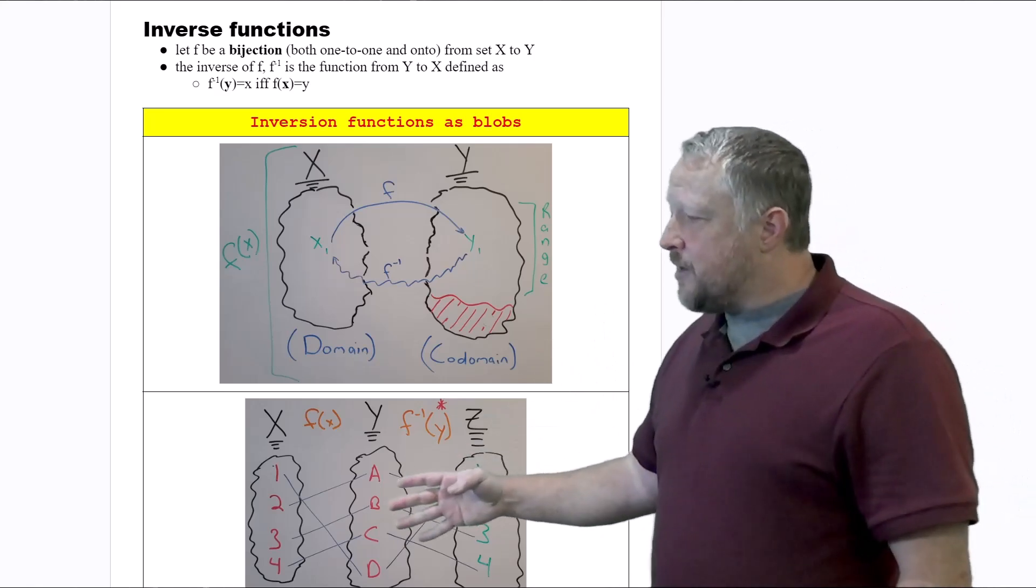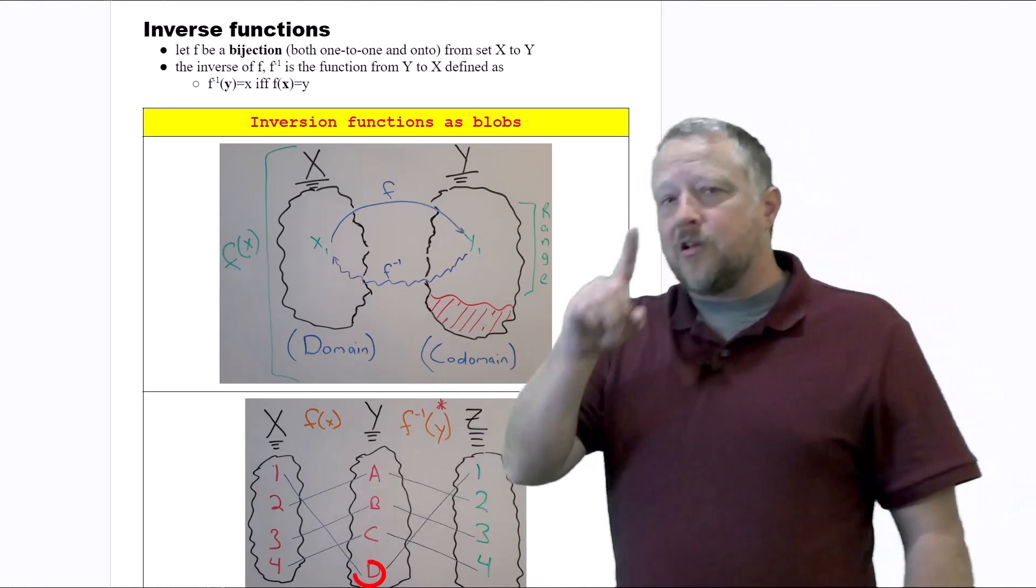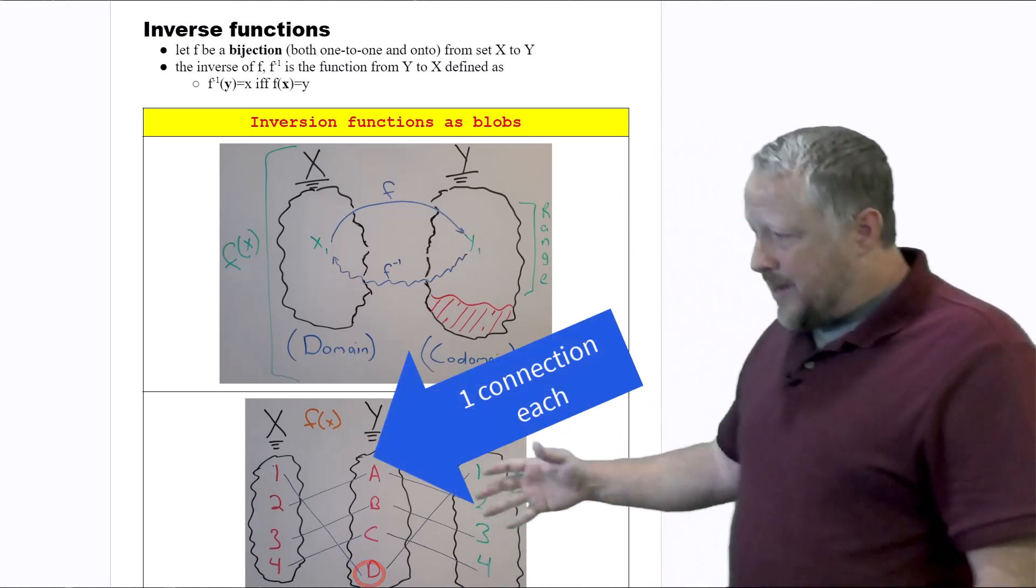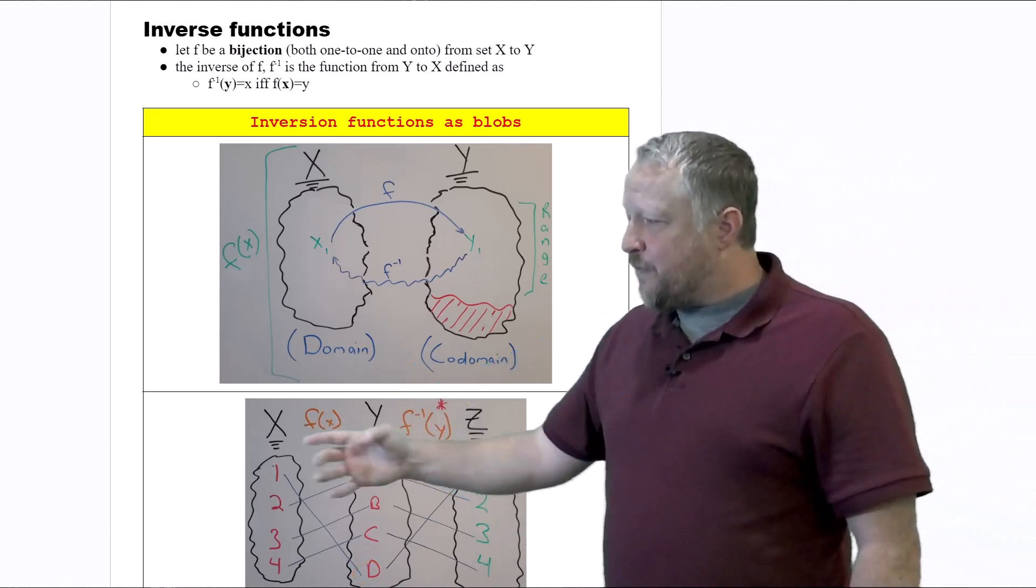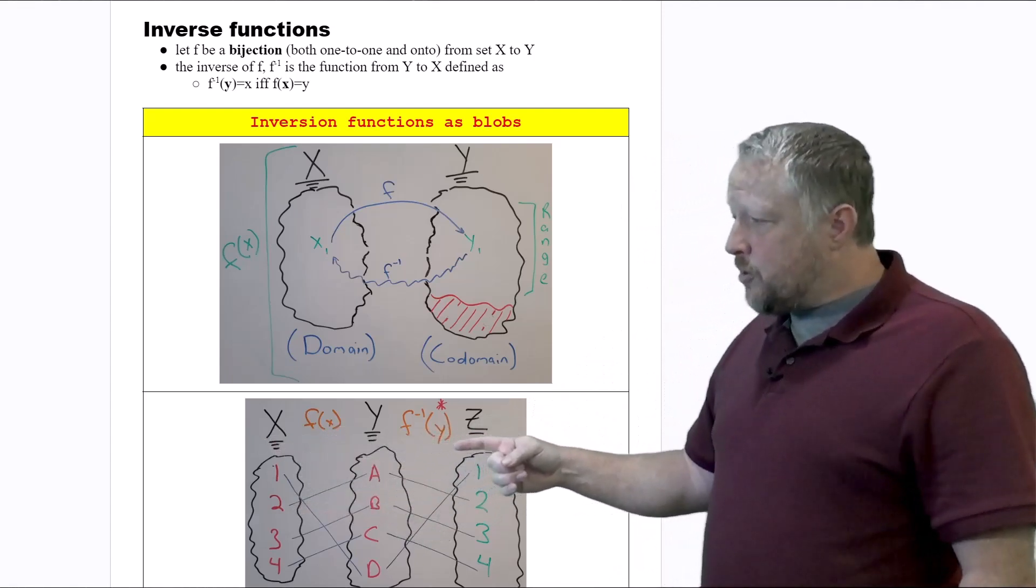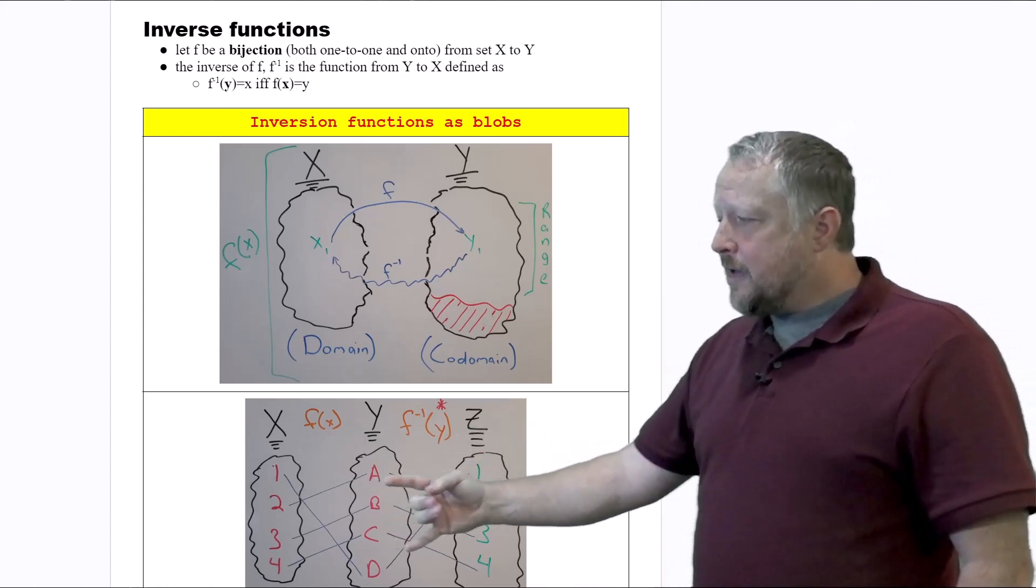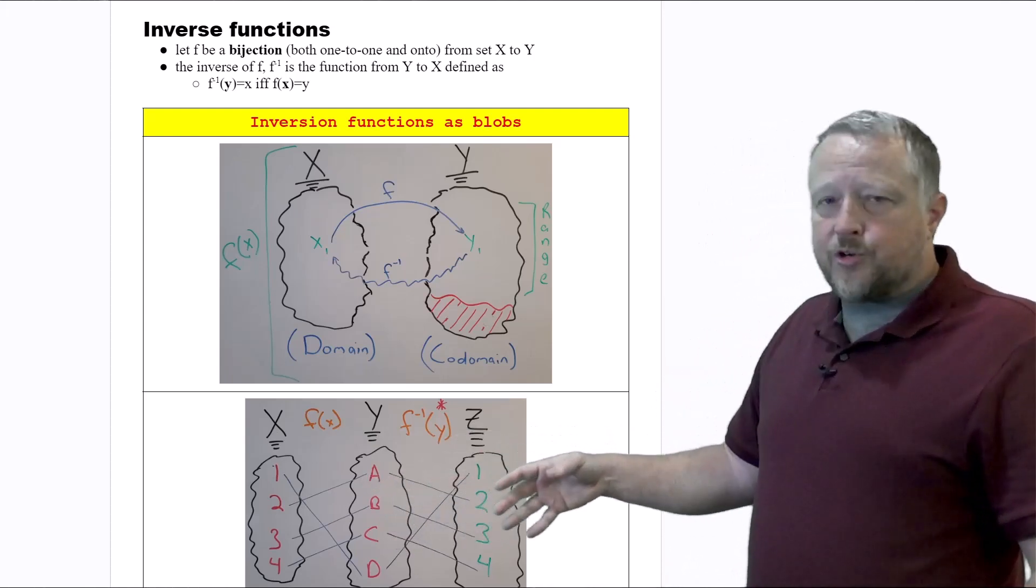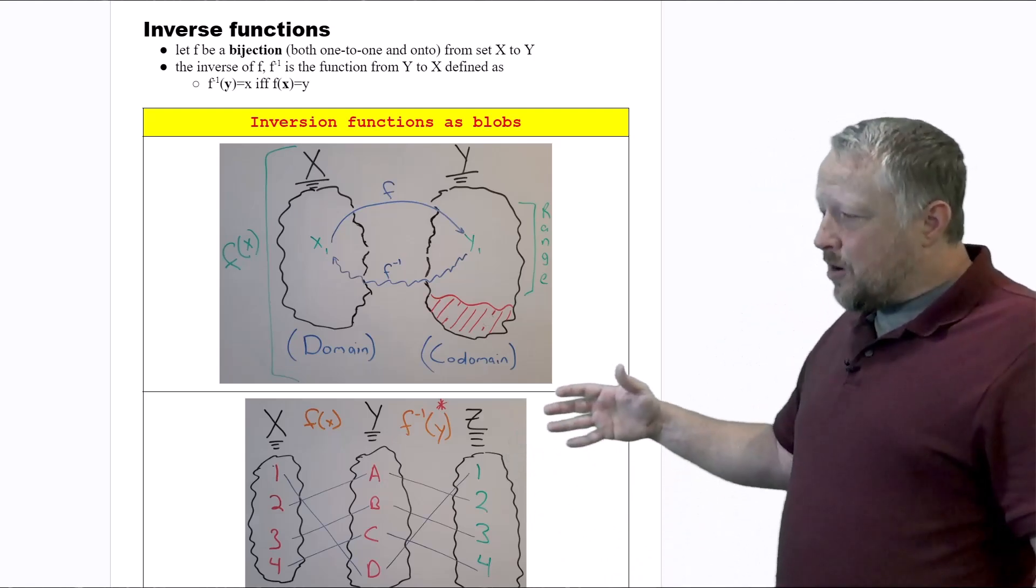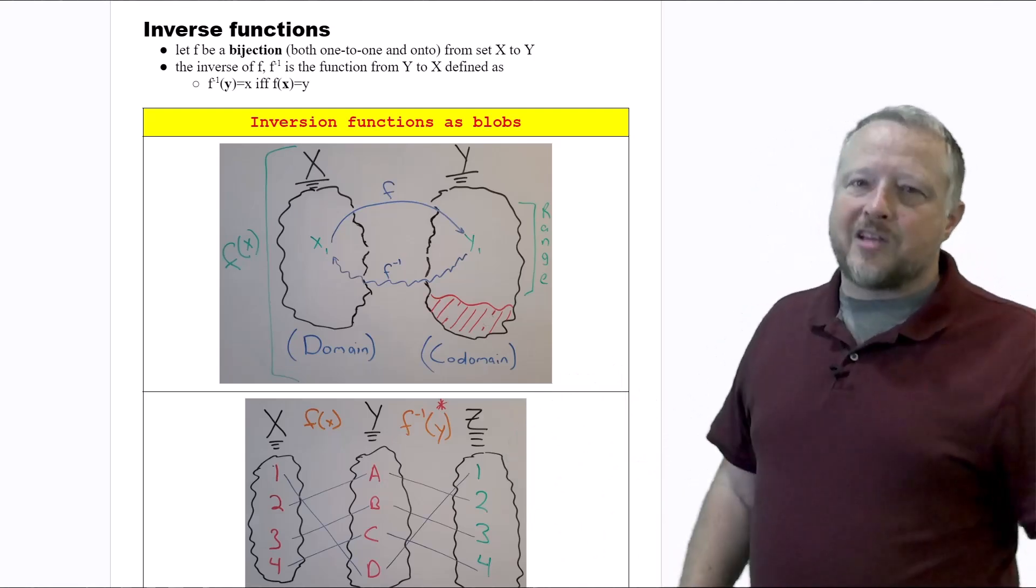Number two, every value in the codomain can map to literally just one value from the domain. So here you're going to see the mapping of f of x. We get all our values and map it to our y, and then when we use our inverse, notice we're using y to then map back to our original set of z, but that's going to be our original domain set that we used.